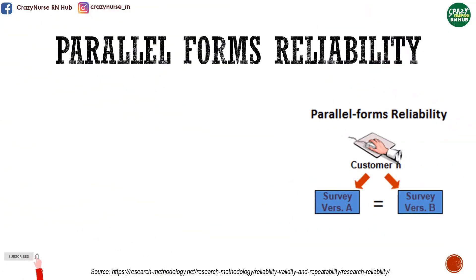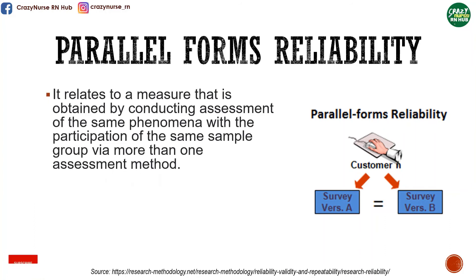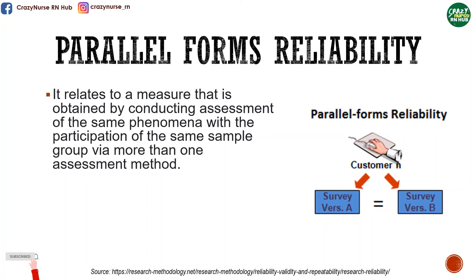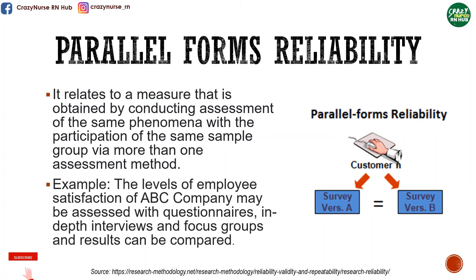Another one is parallel forms reliability. It relates to a measure obtained by conducting assessment of the same phenomena with the participation of the same sample group via more than one assessment method. For example, the levels of employee satisfaction of ABC company may be assessed with questionnaires, in-depth interviews, and focus groups, and results can be compared.